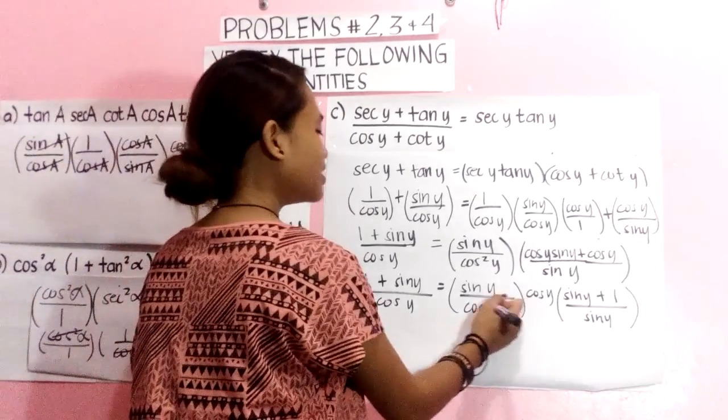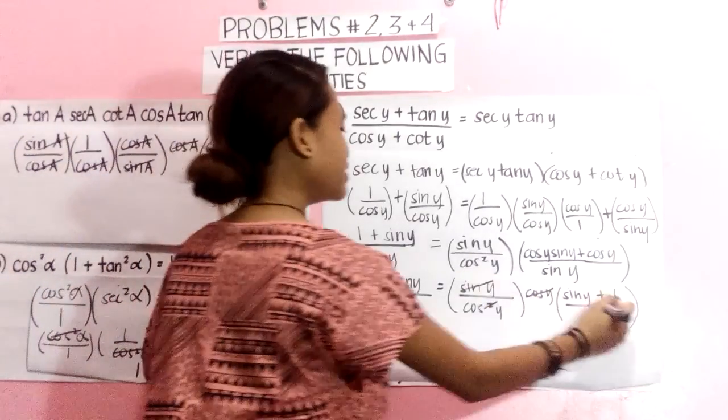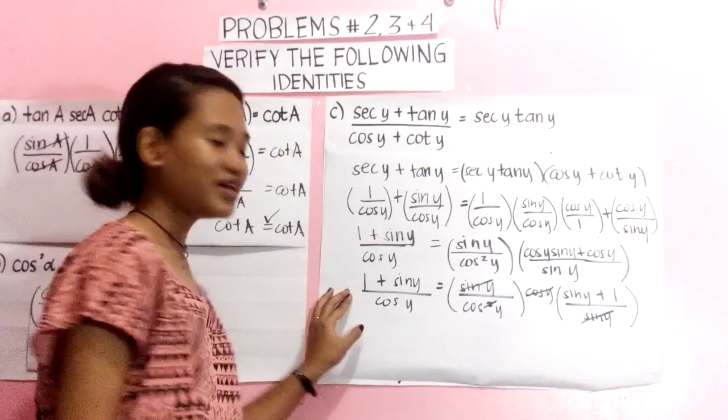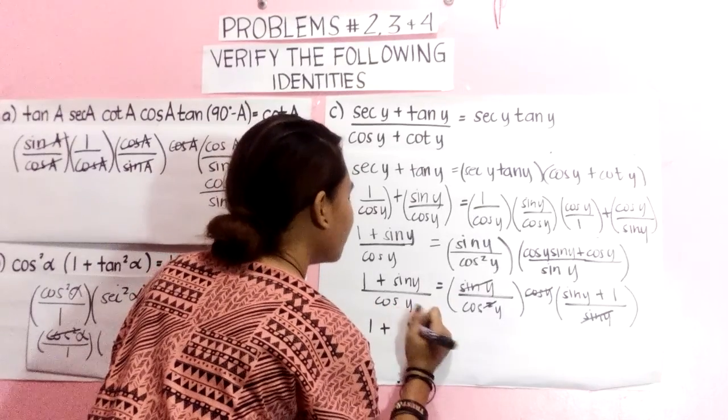We will cancel this cos Y, sin Y, and makes the identity verified.